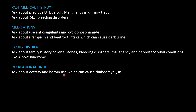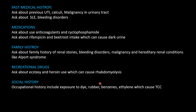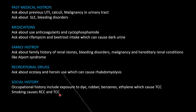Recreational drugs such as ecstasy and heroin can cause rhabdomyolysis, so ask about illicit drug use. In social history, ask about occupation, as exposure to dye, rubber, benzene, and ethylene can cause transitional cell carcinoma of the bladder. Smoking can also cause renal cell carcinoma and transitional cell carcinoma.